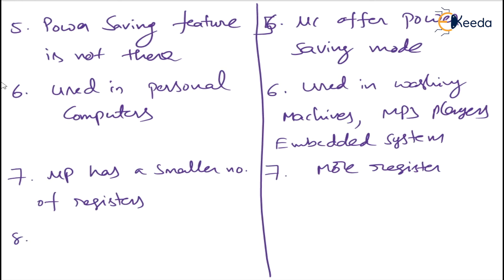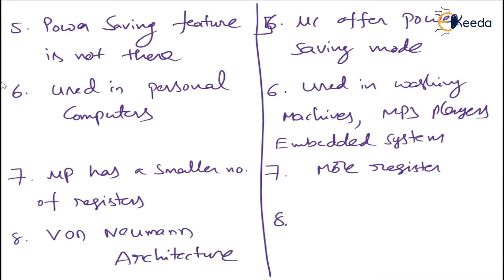Next — this is very important: a microprocessor is based upon Von Neumann architecture, whereas a microcontroller is based upon Harvard architecture. I will explain these architectures clearly in the next class. Please remember: microprocessor → Von Neumann architecture; microcontroller → Harvard architecture.